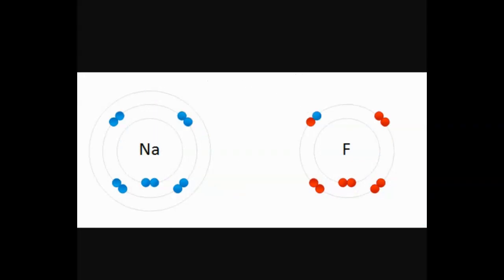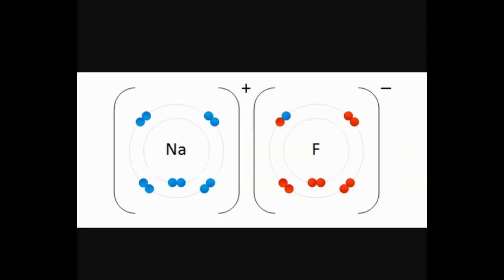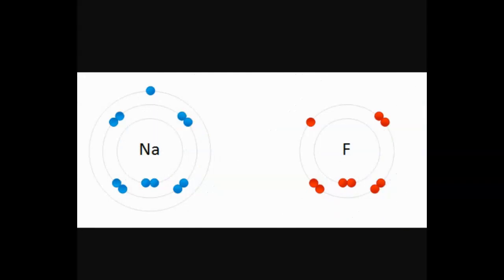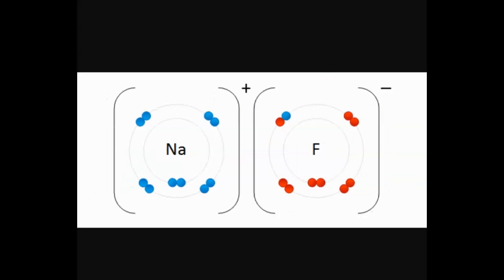Ionic bonds basically have the following steps: first, one of the atoms gives one or more electrons to the other atom. They become oppositely charged, and then they pull together. You guys are going to do quite a few problems where you explore the various different ways that ionic bonding can happen.